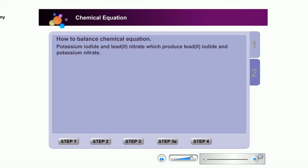There are four steps to be followed to balance a chemical equation. Step 1. Write the word equation. Then, write the correct chemical formulae for reactants and products.